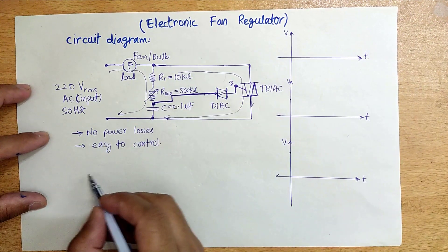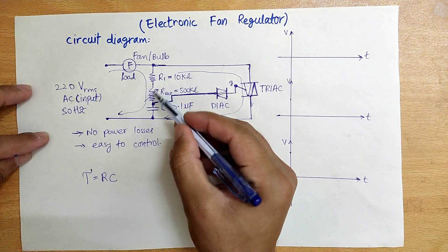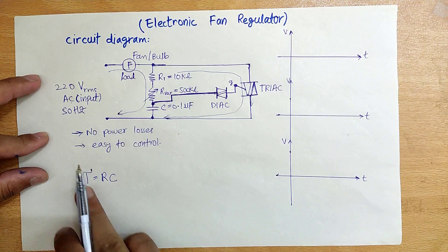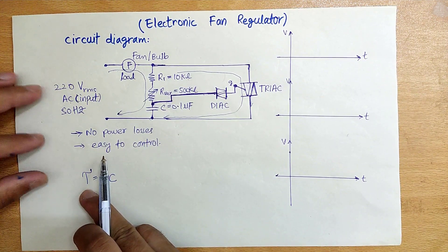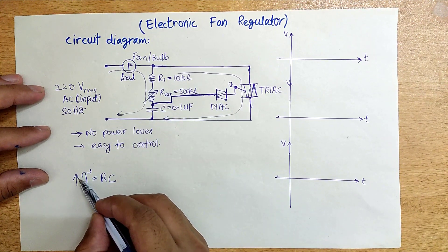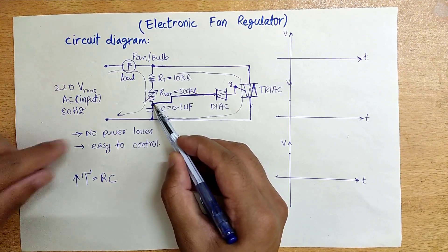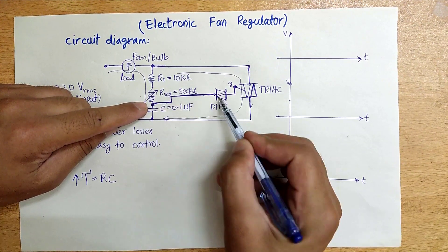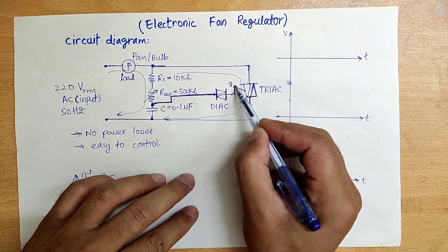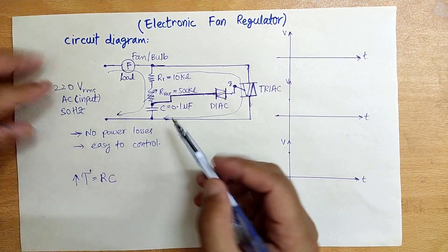This is an RC network where tau equals RC. By increasing or decreasing the resistor, we can change the time constant of the circuit. If we increase the resistor, the time constant increases, and after some time the capacitor voltage will reach the breakdown voltage of the DIAC, which will turn on the DIAC. That voltage appears at the TRIAC gate, turning the TRIAC on, and current flows through this path.